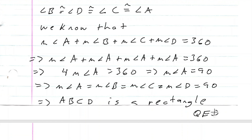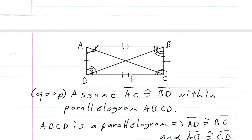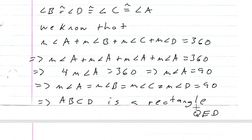And that is the proof. Remember, when you're dealing with a parallelogram where the diagonals are congruent, that means you know the parallelogram is a rectangle. That's a very useful theorem to know.